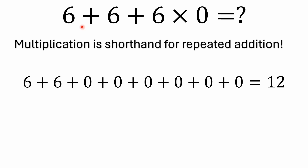If I have 6 plus 6 and I'm adding six zeros — 6 times 0 is the same thing as 0 plus 0 plus 0 plus 0 plus 0 plus 0; it's the same thing as adding 6 zeros. So 6 plus 6 plus all these zeros still equals 12. I could add a billion zeros to 6 plus 6 and I'd still get 12.